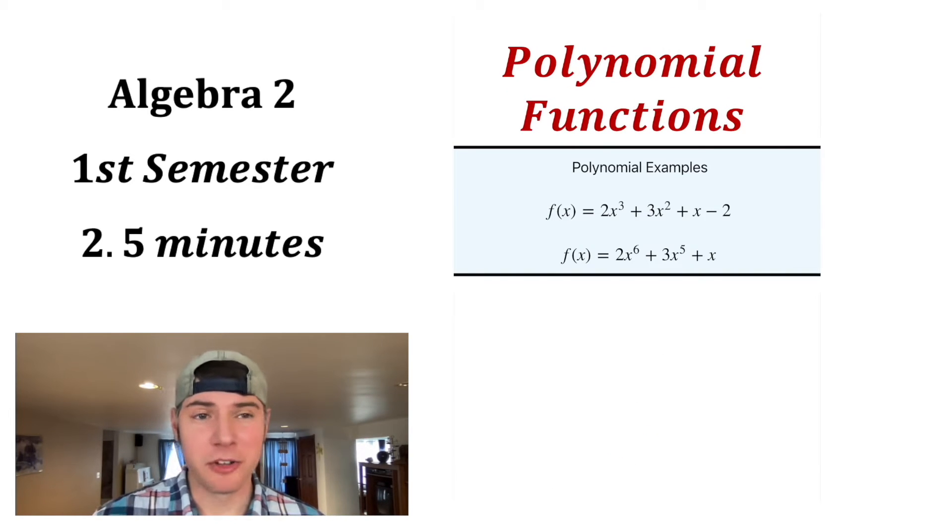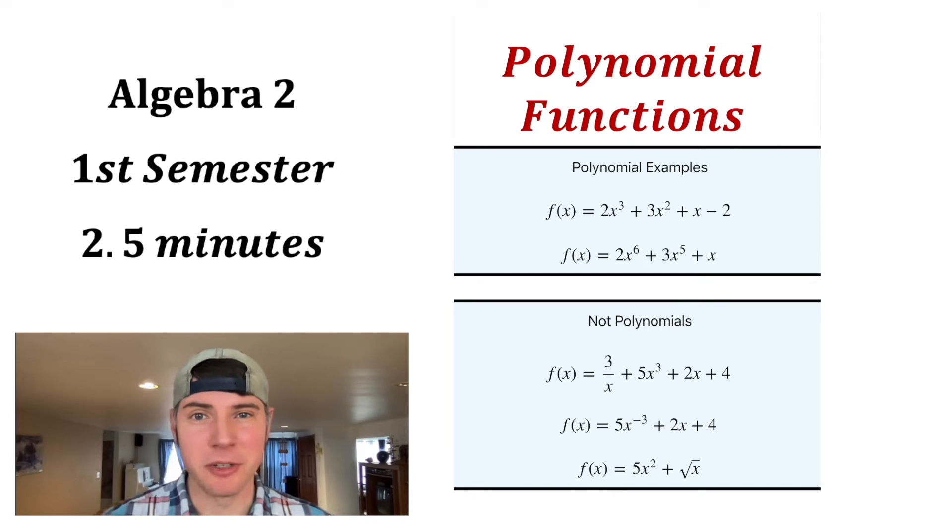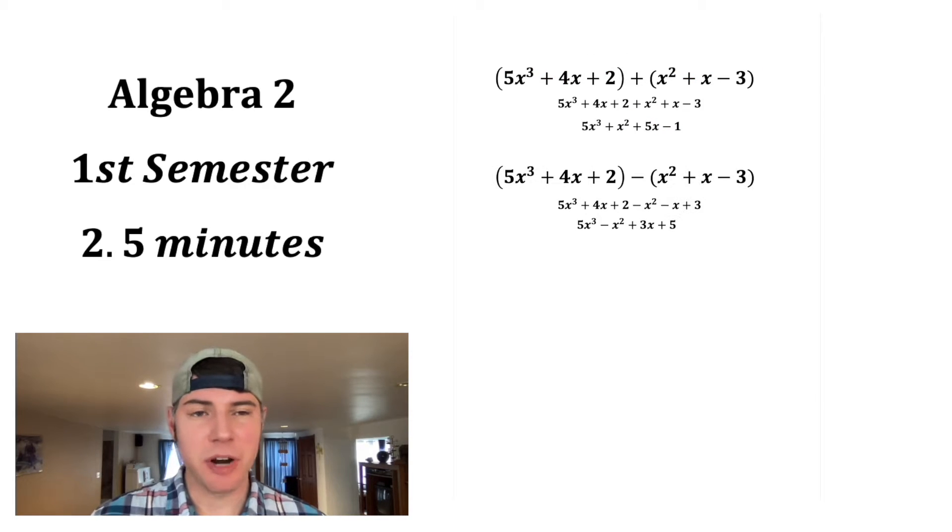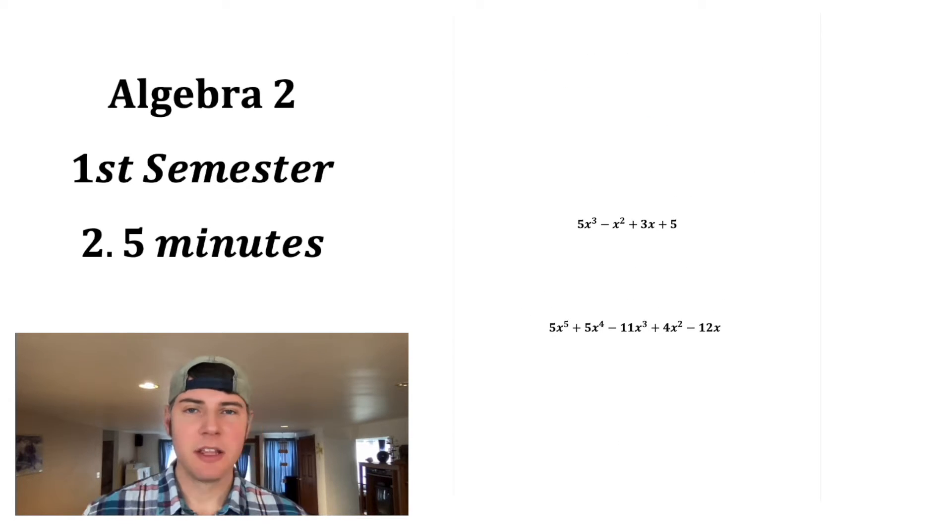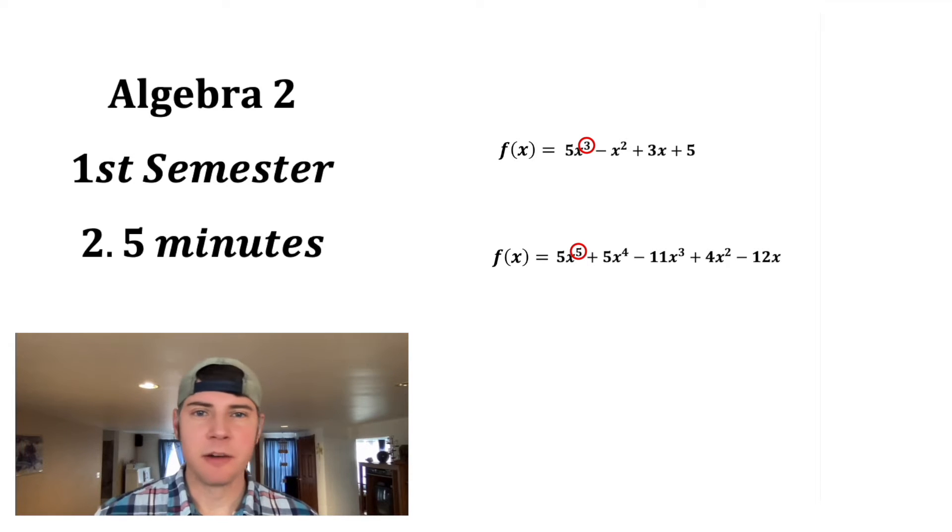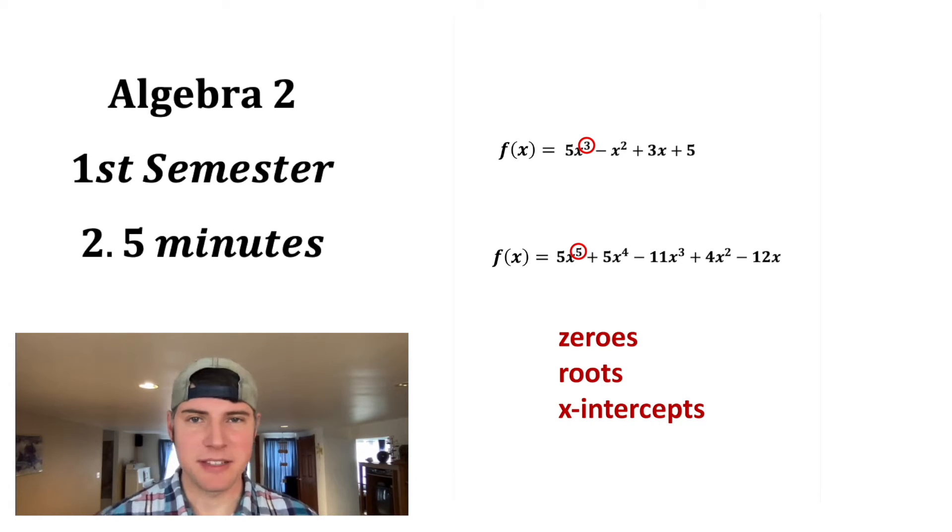Polynomial functions. All of these are polynomial functions. All of these are not polynomial functions. Polynomial functions have terms with coefficients and whole number exponents being added together. We can add, subtract, multiply, and divide polynomials. The degree of a polynomial is the same as the highest exponent. And the number of zeros, or roots, or x-intercepts of a polynomial function is the same as that degree.